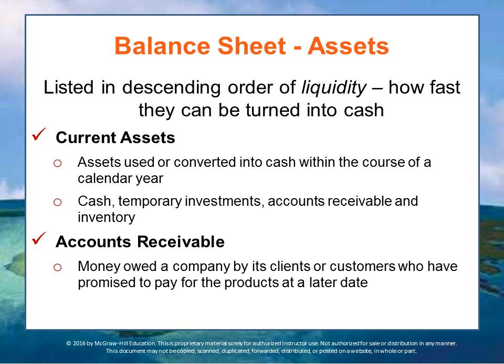You have accounts receivable, which is what customers owe you for products they purchased — you're lending in the very short term to your customers — and then inventory in that order. Accounts receivable is the money owed to the company by its clients or customers, and this usually includes an allowance for bad debts. Some people might not pay you, so you have to correct for that to make sure you don't over-count your cash assets.